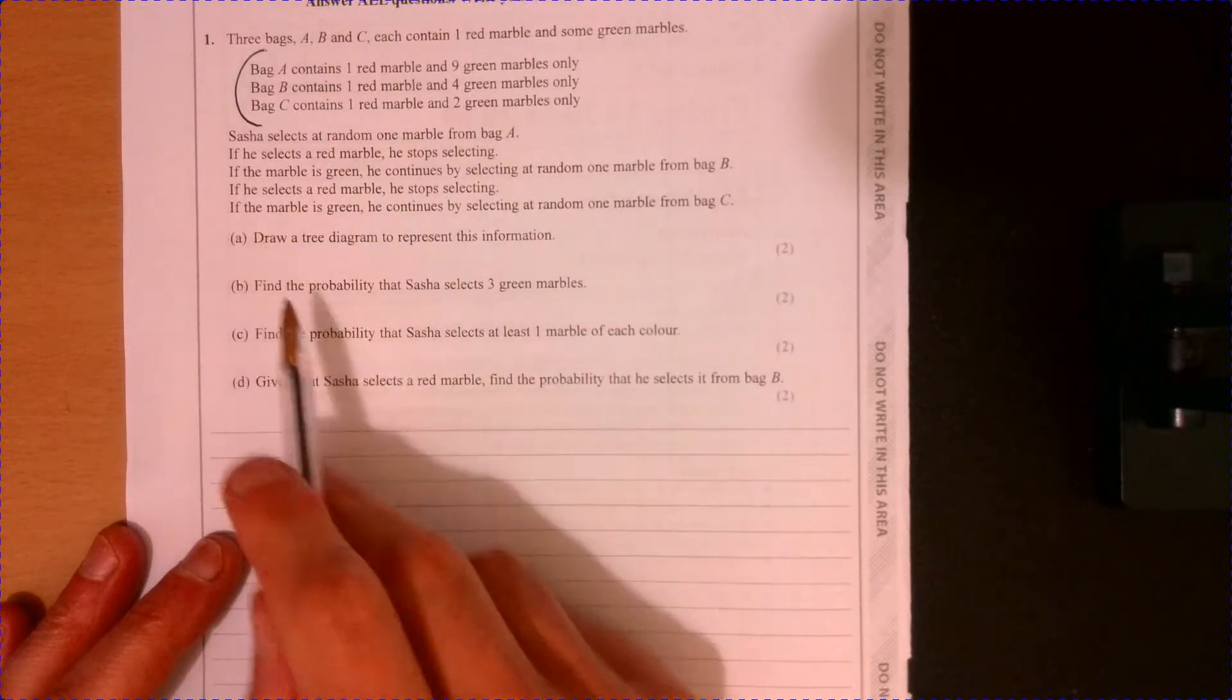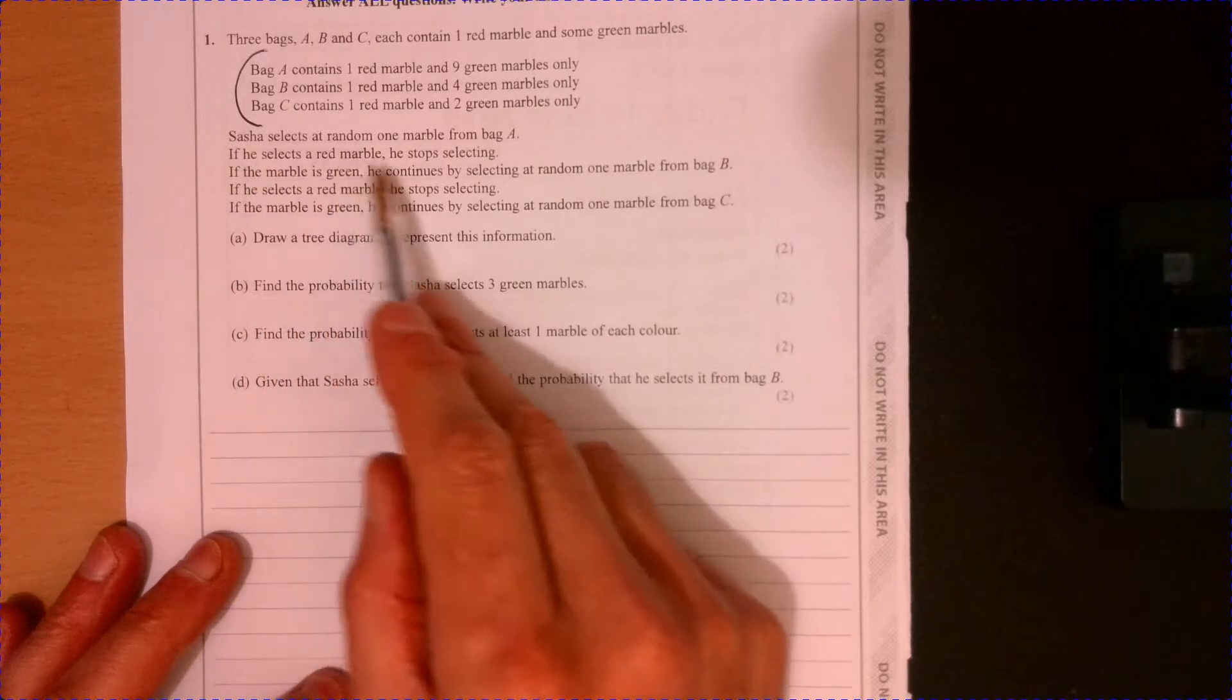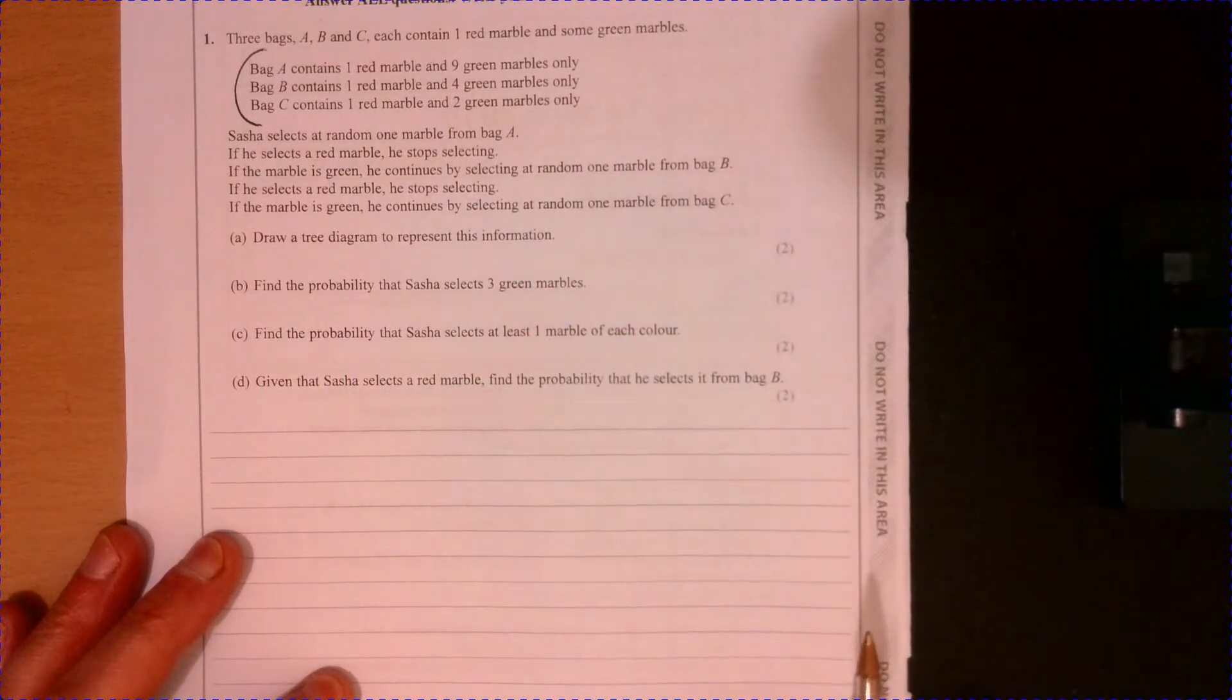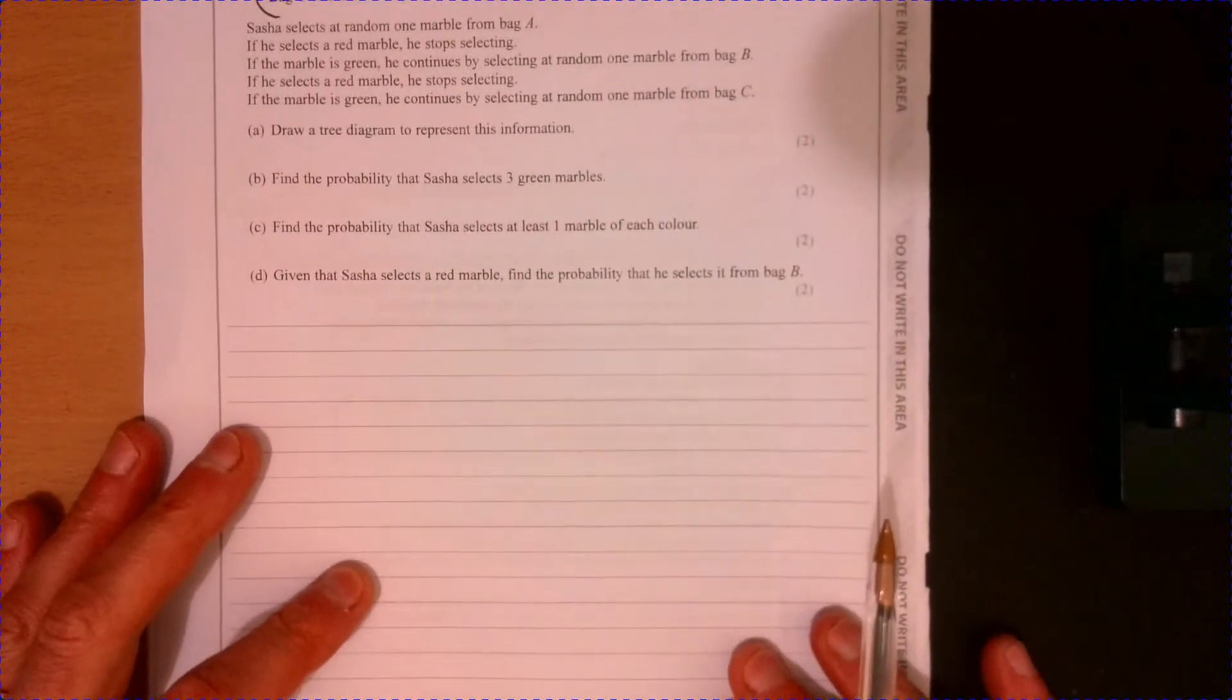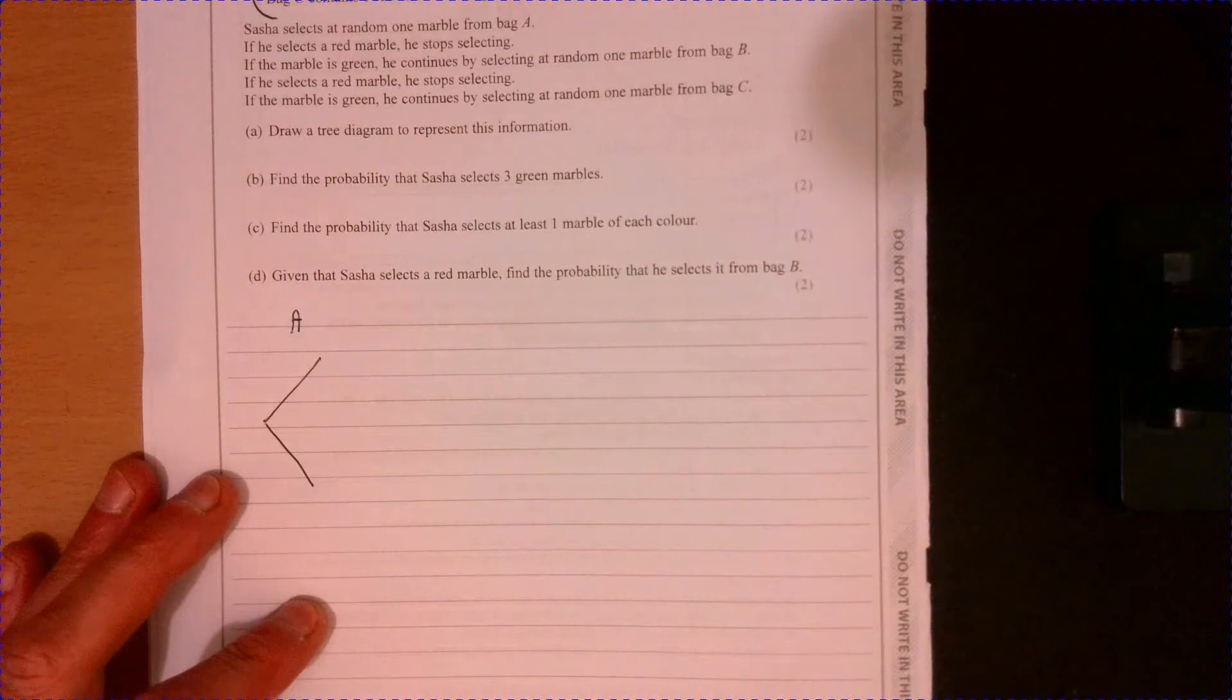So the question is, what actually happens is if we take out a red one, we stop. So we start with bag A, bag B, bag C, etc. So the first part of the question is draw a tree diagram. So let's think about bag A to begin with.